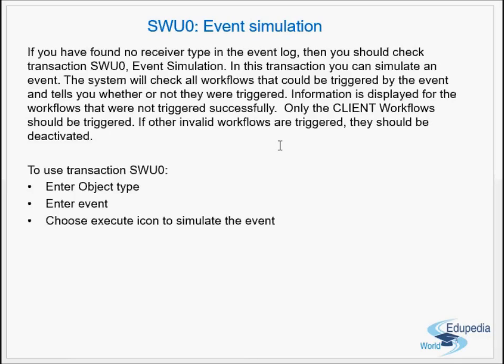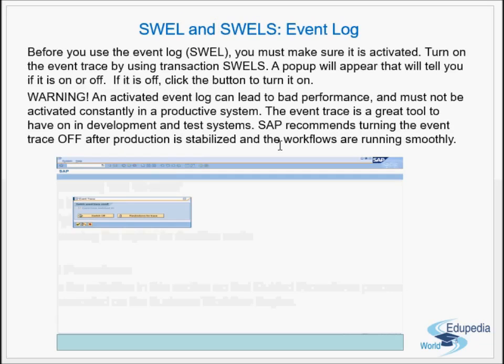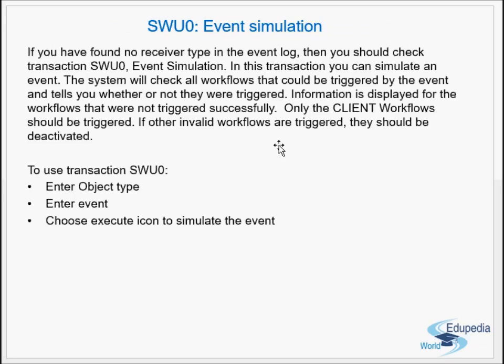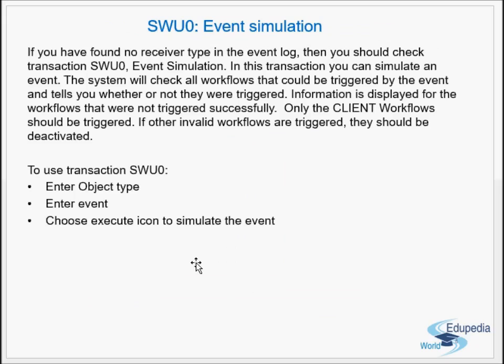The next transaction is SWU0 — Event Simulation. If you have found no receiver type in the event log, you should check SWU0. In this transaction you can simulate an event; the system will check all the workflows that could be triggered by that event and tells you whether or not they were triggered. You enter the object type and the event, then execute to simulate.